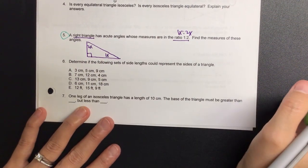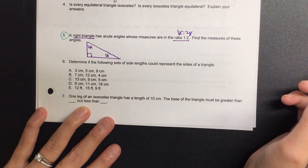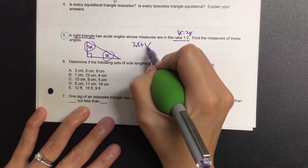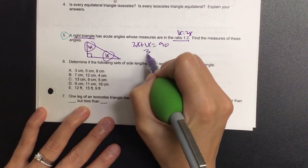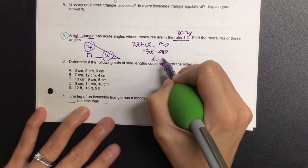So I can either set this equal to 180 or 90. What do you guys prefer? 90? So I can set these two equal to 90. 2x plus 1x must be 90. 3x must be 90. So therefore, x must be 30.